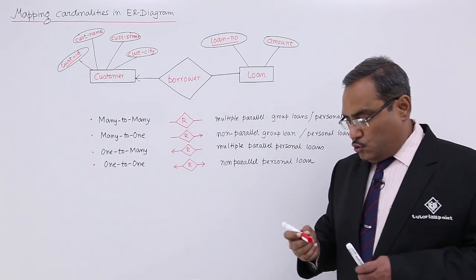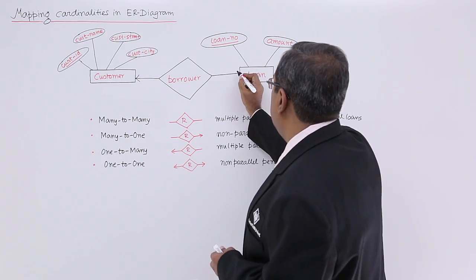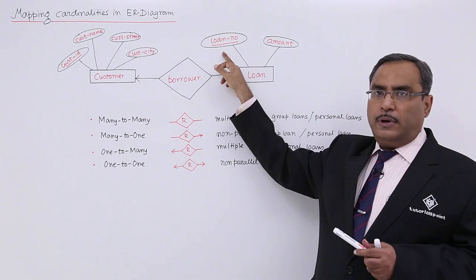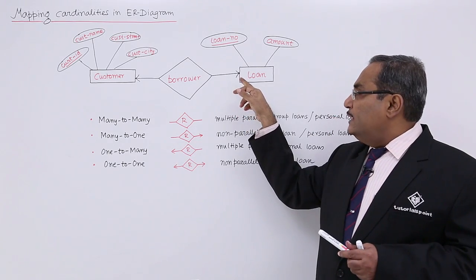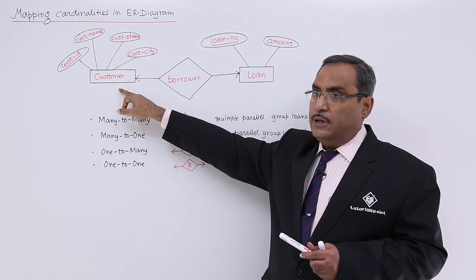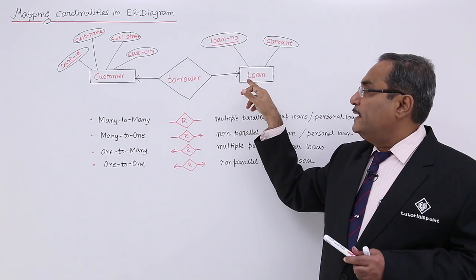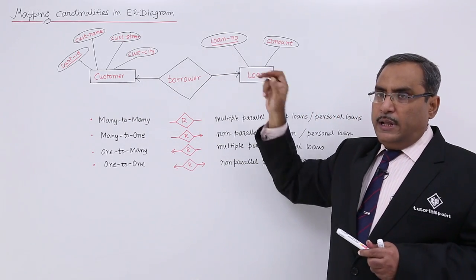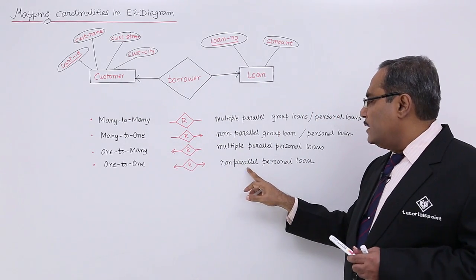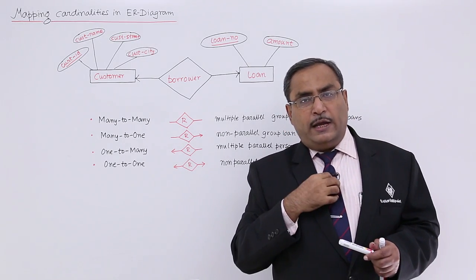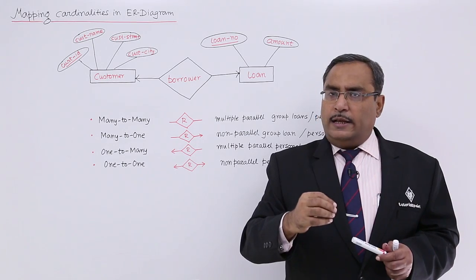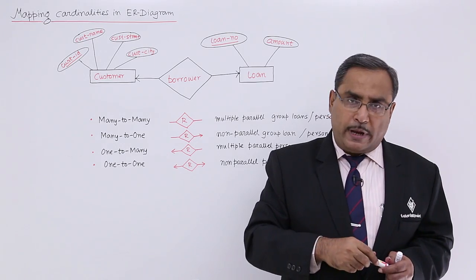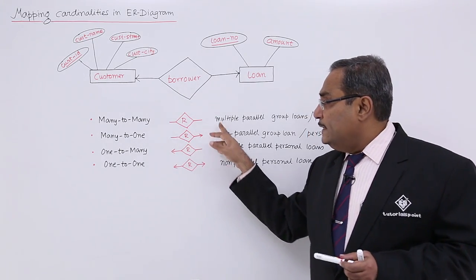In case of one-to-one, arrows will be on both sides. That means against one Customer there will be one Loan Number, and against one Loan Number there will be only one Customer. This is a personal loan, and it is non-parallel. So if a customer has taken a loan from this bank, until they pay the full amount back, the bank will not issue another loan against that Customer ID.